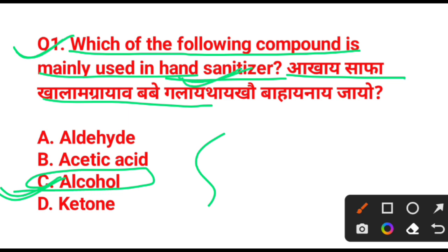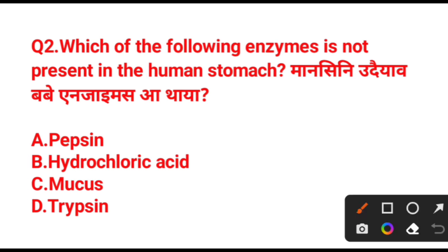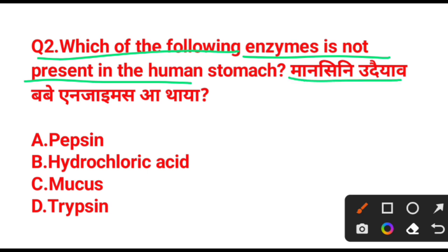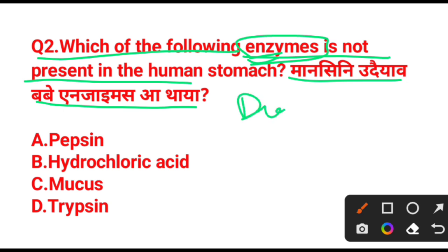Next question: which of the following enzymes is not present in the human stomach? So, how many enzymes are there? The enzyme is not present. The enzyme is not present in the body — the body and digestion are very important and essential.